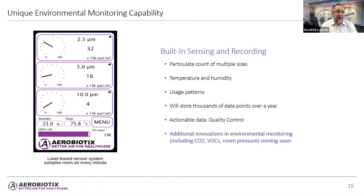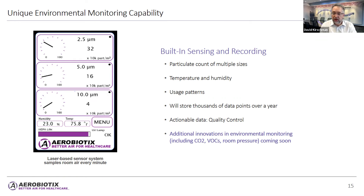Our systems include a unique environmental monitoring capability, with built-in sensing and recording of particulate counts at multiple particle sizes, temperature and humidity, and usage patterns such as when the unit was turned on and off. The system stores thousands of data points over a year and provides actionable data on environmental quality. This data can be downloaded and reported monthly or quarterly to the perioperative team. Future innovations will include room CO2, volatile organic compounds, and room pressure readings to confirm positive pressure.